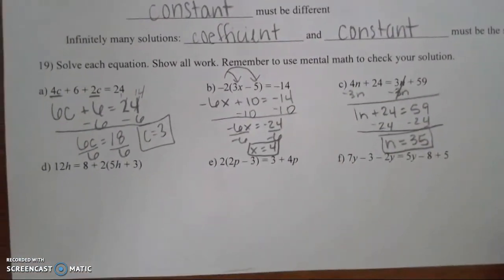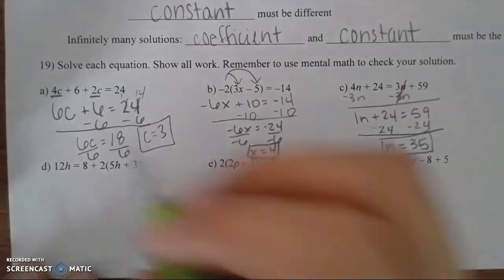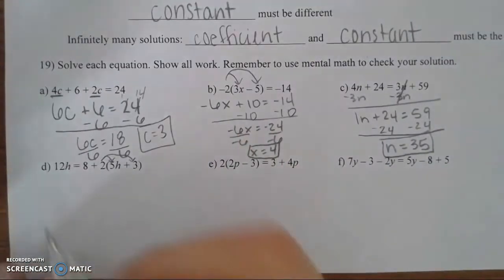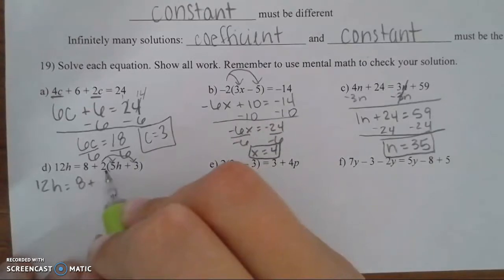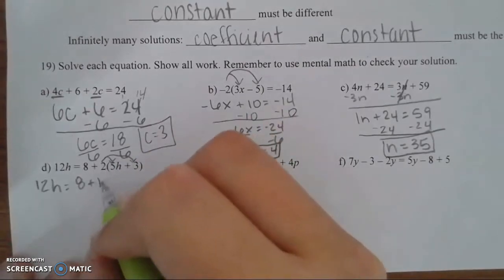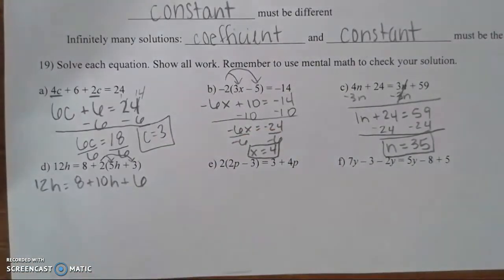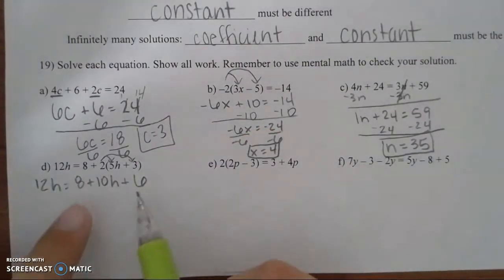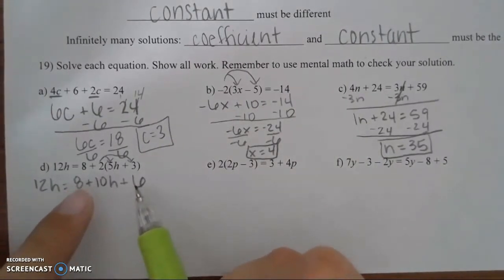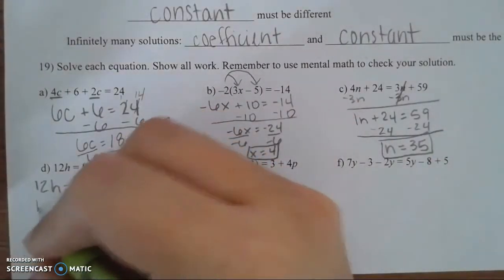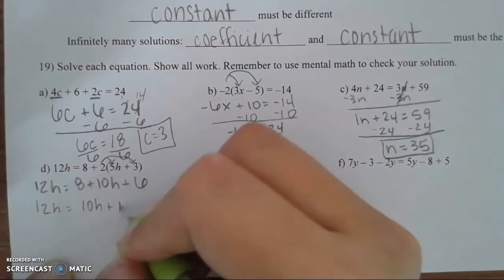For problem D, we have variables on both sides but we must use the distributive property first. Take the 2 times everything on the inside: 2 times 6h gives 12h on the left. On the right: 2 times 5h is 10h and 2 times 3 is 6, plus the existing 8. Notice there are like terms on the right side — combine 8 plus 6 to get 14. So now we have 12h equals 10h plus 14.